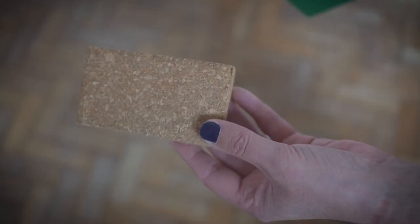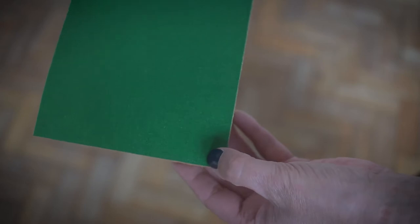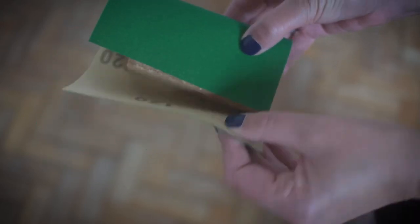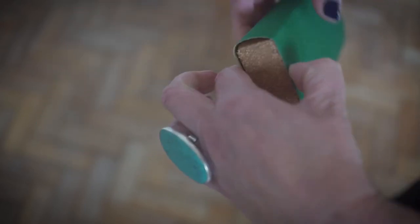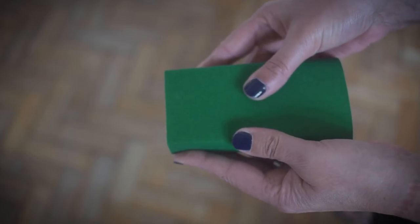A sanding block. This gives a nice flat finish when you are sanding, and if you have a lot of sanding to do, it will also stop your fingers from aching.